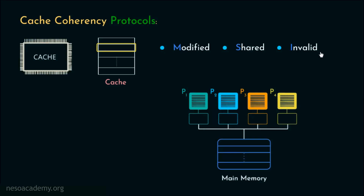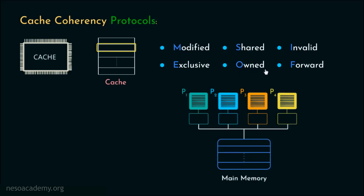Apart from Modified, Shared, and Invalid, we can specify additional states for a cache line: exclusive, owned, and forward. The 'exclusive' state means the cache line is present only in the current cache and matches the main memory — it may change to shared at any time in response to a read request from another processor. The 'owned' state means the cache is the sole owner of that content and will be responsible for satisfying read requests from all other processors. The 'forward' state is a specialized form of the shared state — if a memory block is shared by multiple caches and one is in the forward state, when the block gets updated that cache is responsible for forwarding the update to all the others.